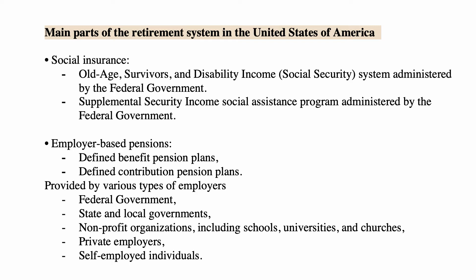The main system is called Old Age Survivors and Disability Income, but everybody calls it Social Security. It is administered by the Federal Government through the Social Security Administration. There is also a Supplemental Security Income social assistance program, popularly called SSI, administered by the federal government. It is much smaller, is not social insurance, and is for elderly people, so it could be considered part of the retirement system.